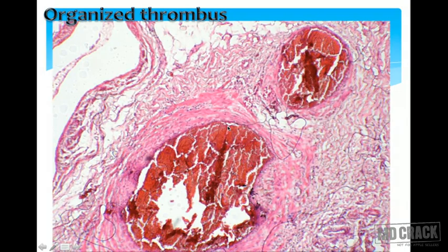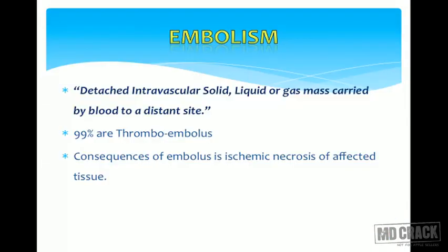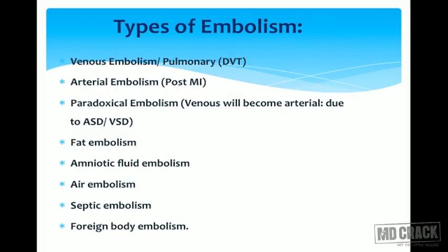An embolus is defined as a detached intravascular mass — solid, liquid, or gaseous — carried by the blood to a distant site away from its origin. Initially it is a thrombus; once it travels to a distant area it is called an embolus. Ninety-nine percent of emboli are thromboembolism, meaning a thrombus dislodged from its site of origin. The consequence is ischemic necrosis of the affected tissue, obstructing blood supply to that particular organ.